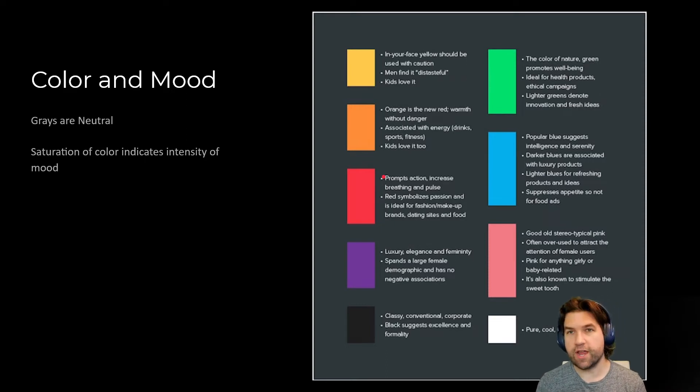Color also has a lot to do with mood, and color is very cultural. Different cultures have different beliefs about styles of color. This is an example of a breakdown of how in the Western world we tend to think about colors. But in some places, white is the color of evil, or purple might be a color representing death, or red might be a color that represents something like a wedding.